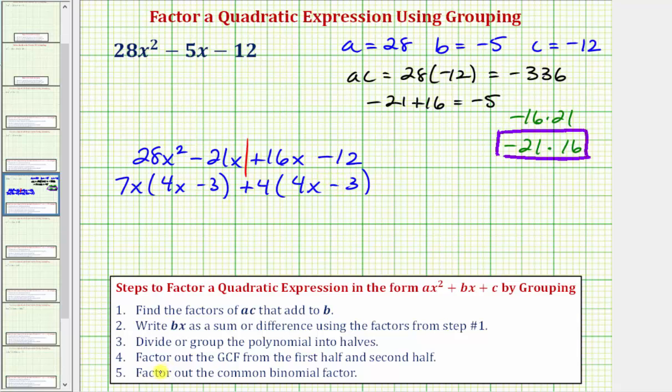So our last step, step five, is to factor out the common binomial factor. So if we factor out the quantity four x minus three, notice how we'll be left with seven x plus four, which is our second factor. The order of the factors doesn't matter, but we now have the given trinomial in factored form.